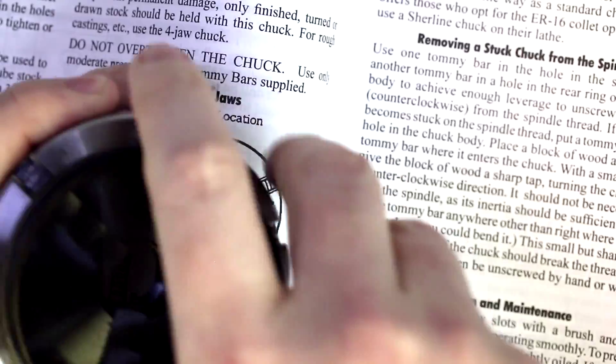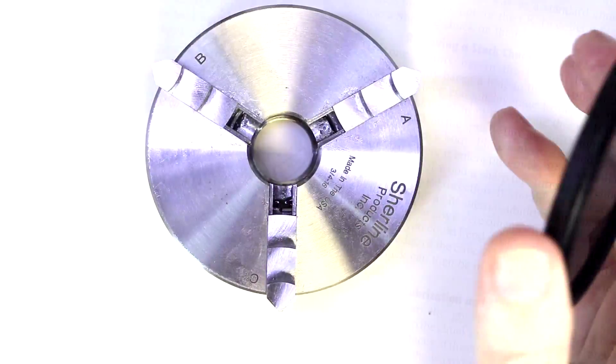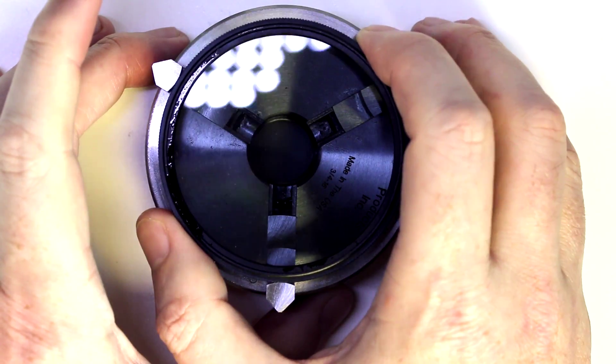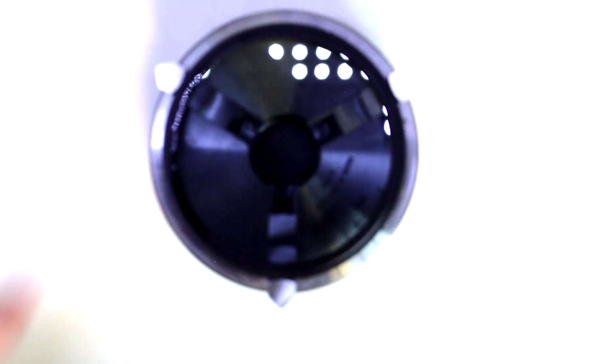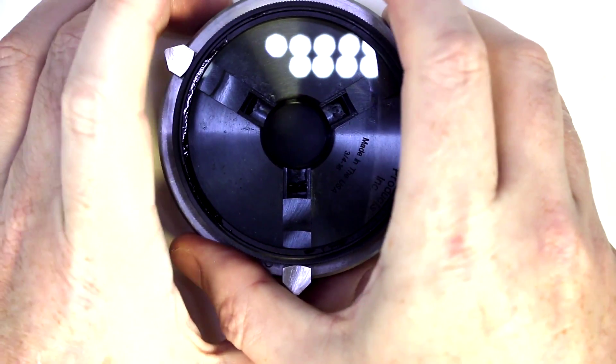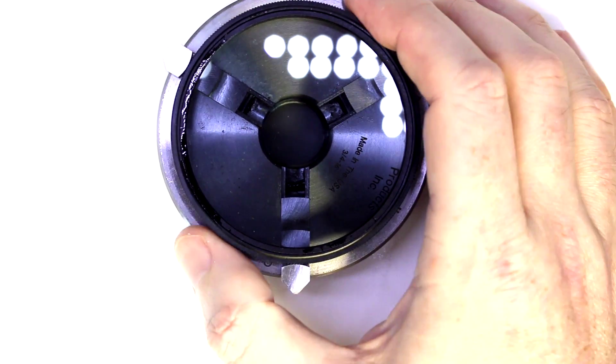Now if we wanted to hold this on the outside diameter, we could loosen it. So I just took the manual out of the way, just because it kept sliding down. If we wanted to hold this on the outside, we could open those jaws up, place it like so, and then tighten it down. So this would allow us to work on a fairly large diameter piece.